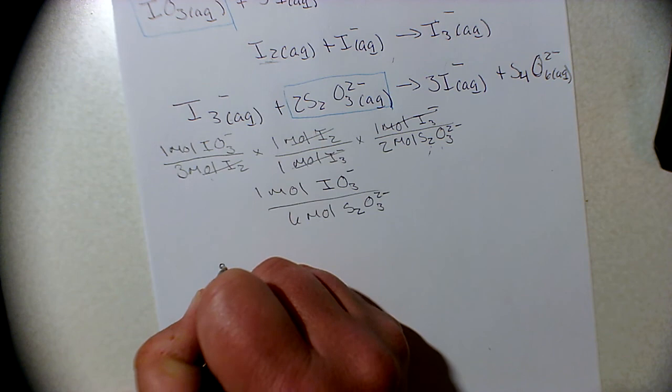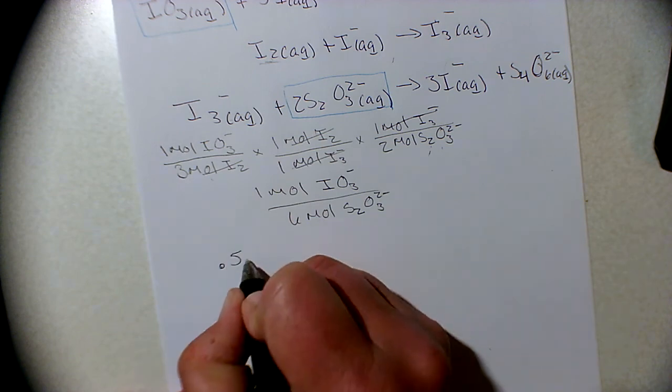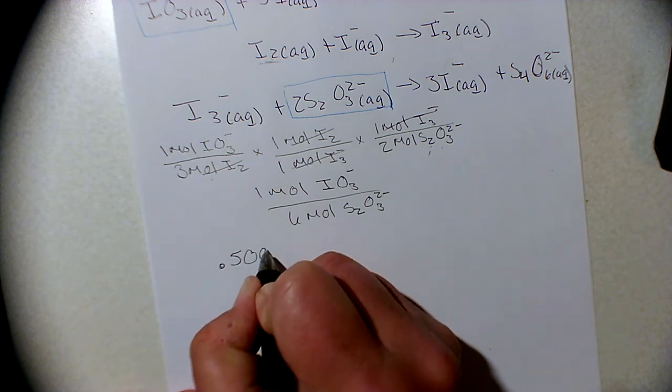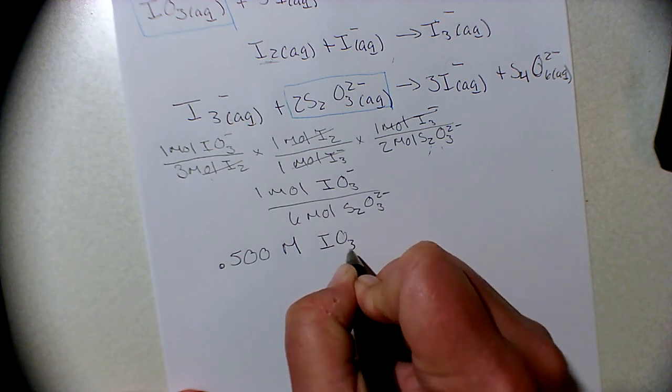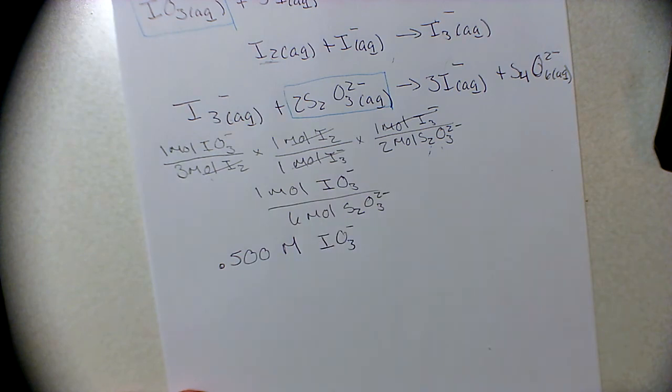0.500 molar IO3 minus, and we want to know how many moles do we predict given the volume that we've used of our potassium iodate. How many moles do we think we'll get for our sodium thiosulfate?